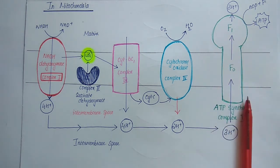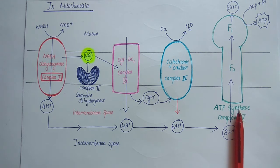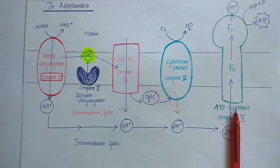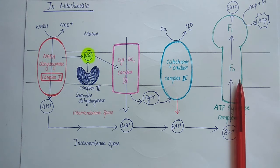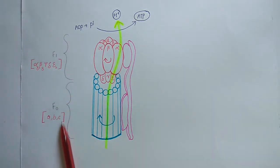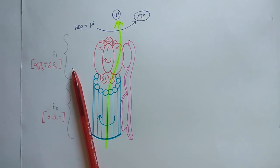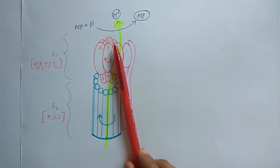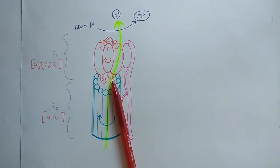ATP synthase, also called complex 5, is a large enzyme complex of the inner mitochondrial membrane that catalyzes the formation of ATP from ADP, driven by the flow of protons from the intermembrane space to the matrix. ATP synthase consists of two major components: F0 and F1. F1 is a peripheral membrane protein composed of at least 5 different subunits containing the catalytic site for ATP synthesis. F1 is composed of 3 alpha, 3 beta, 1 delta, 1 gamma, and 1 epsilon subunits, and is attached to the matrix side of the inner membrane.